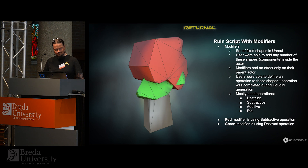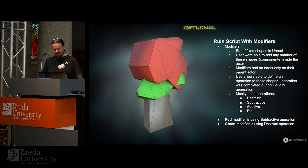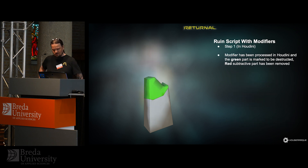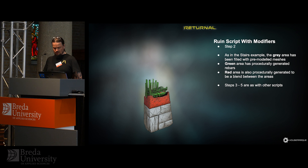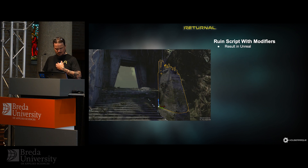Modifiers are fixed shapes placed as components into Unreal actors. They have different operations: mostly used ones are destruct, subtractive, and additive. The red modifier uses a subtractive operation, the green one uses destruct. After processing, the red mesh has subtracted a portion from the base mesh, and the green has marked a portion as destructible. The normal script steps then follow — grey areas are stacked pre-modeled meshes as before, new elements are the fully procedural green rebars for the destructible part, and a red blending area between regions.